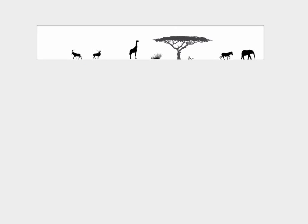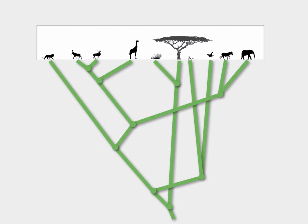As biologists, we look at nature and discover much about biological processes. We can look at predation, flight, movement, and things like that. Once you add a phylogenetic tree showing evolutionary relationships, you can find out so much more.